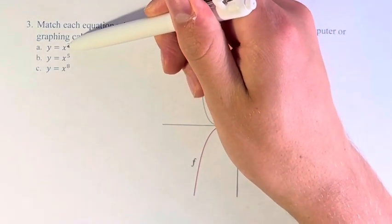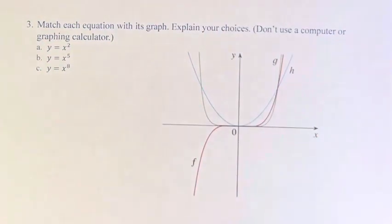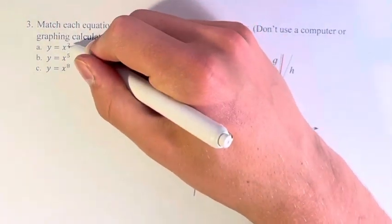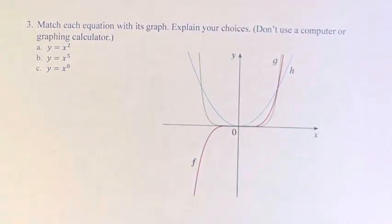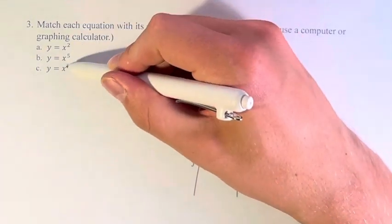So we have y equals x squared, y equals x to the fifth, and y equals x to the eighth. The first thing we can notice is that y equals x squared and y equals x to the eighth have even exponents.